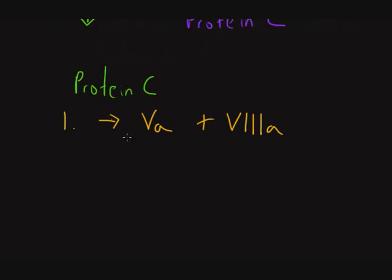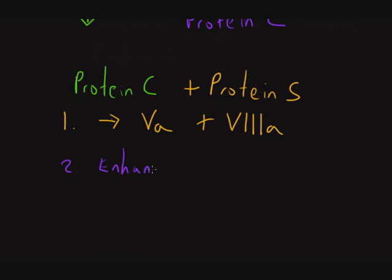This process is augmented when protein C binds with another anticoagulant protein called protein S. Protein C also enhances fibrinolysis — the digestion of fibrin formed by the clotting cascade — which represents an additional anticoagulant effect.